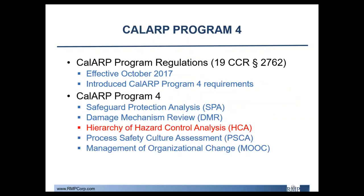If you are a refinery in California, you are aware of the new Cal-ARP regulations which took effect last October and introduced the Cal-ARP Program 4 requirements, which are specific to refineries in California. As part of Cal-ARP Program 4, several new elements were introduced, including Safeguard Protection Analysis (SPA), Damage Mechanism Review (DMR), Hierarchy of Hazard Control Analysis (HCA), Process Safety Culture Assessments (PSCA), and Management of Organizational Change (MOOC), and more. Today we will focus on the hierarchy of hazard control analysis element, also referred to as HCA.